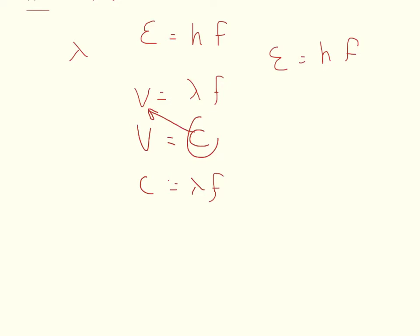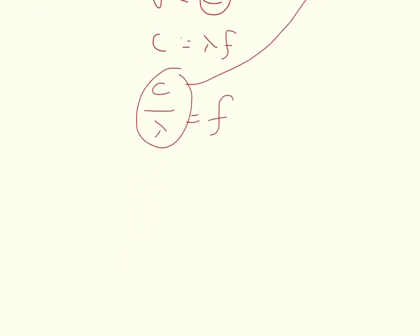So we divide by the wavelength. So c over lambda is equal to the frequency. And then we can just plug this in to substitute for the frequency. And so we get that the energy is equal to the Planck's constant times c over lambda.